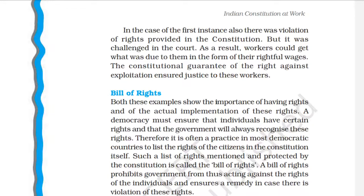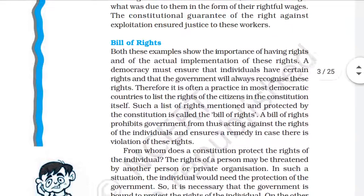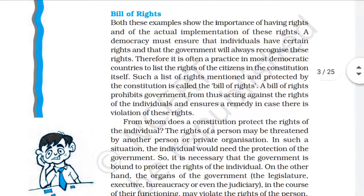In the first case, the poor workers who were not paid standard wages got their rights restored after the intervention of social activists. But in the second case, the whole life of Michael was destroyed. These examples show that fundamental rights can be violated even by the government and other institutions, and sometimes the lives of people can be completely destroyed in this process. We will study all these things in this chapter. In the next class we will study the bill of rights. Thank you for watching this video.